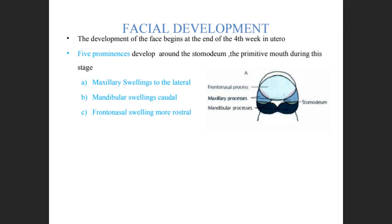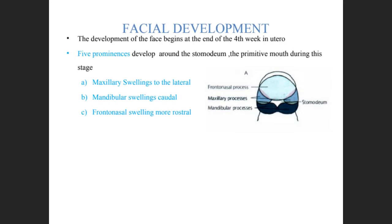Coming to facial development — we'll continue postnatal and prenatal growth in the next lecture. Development of the face begins at the end of the fourth week of intrauterine life. There are five prominences: the maxillary swelling towards the lateral, the mandibular swelling towards the caudal, and the frontonasal swelling which is more rostral — that's upward. There are two maxillary swellings, two mandibular swellings, and one frontonasal swelling.